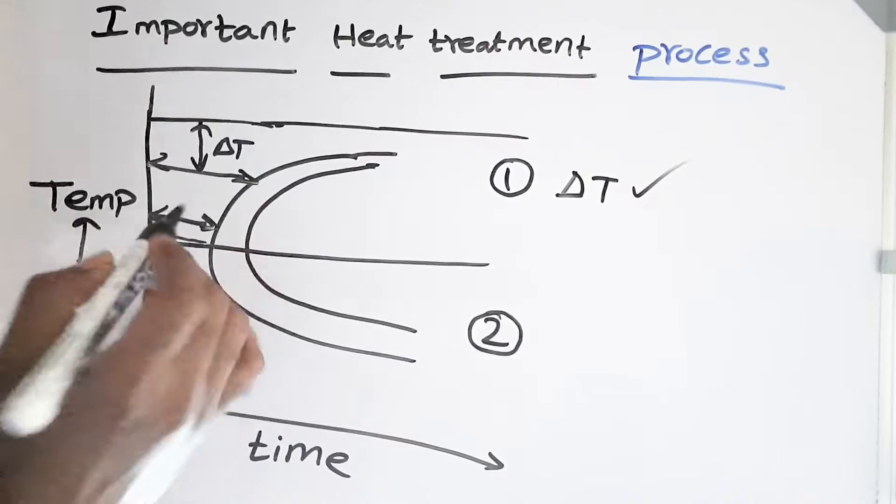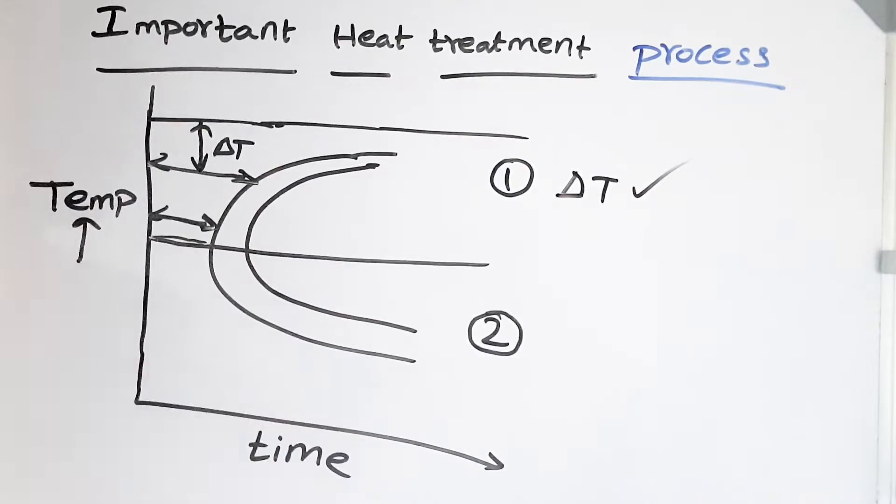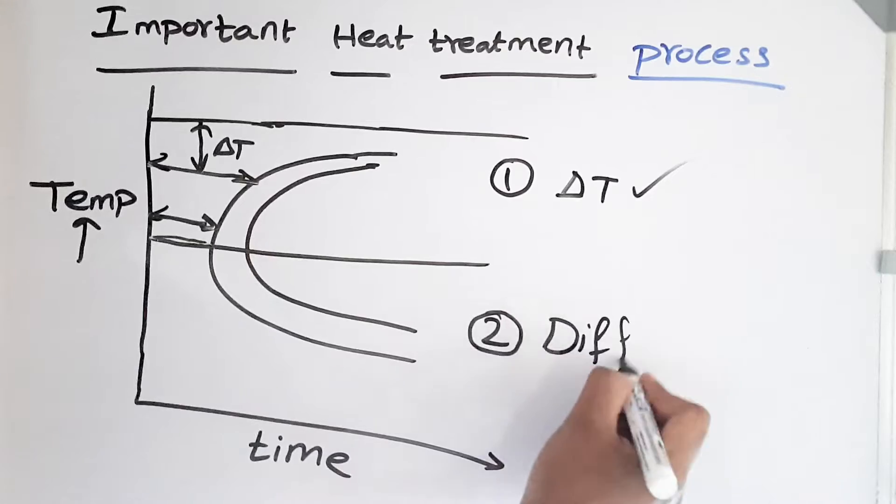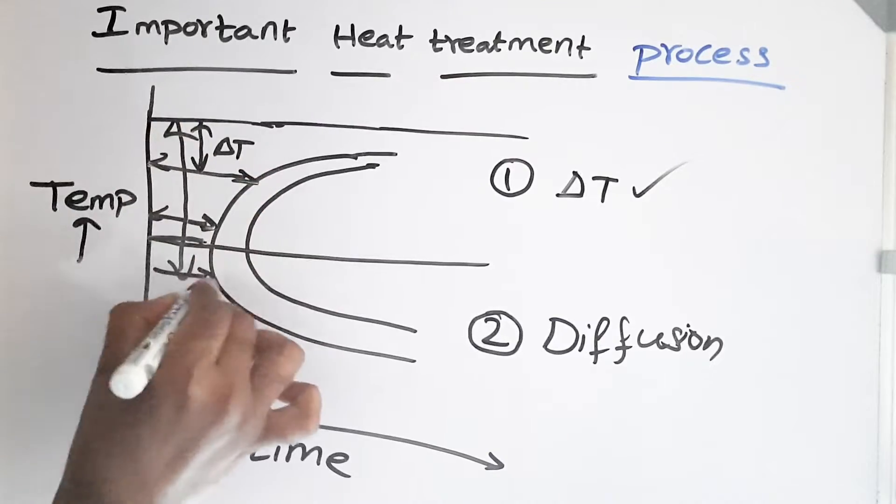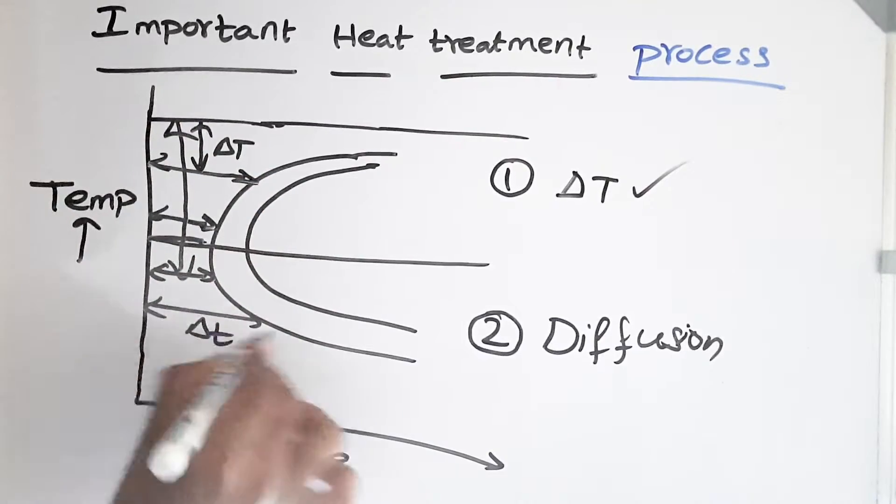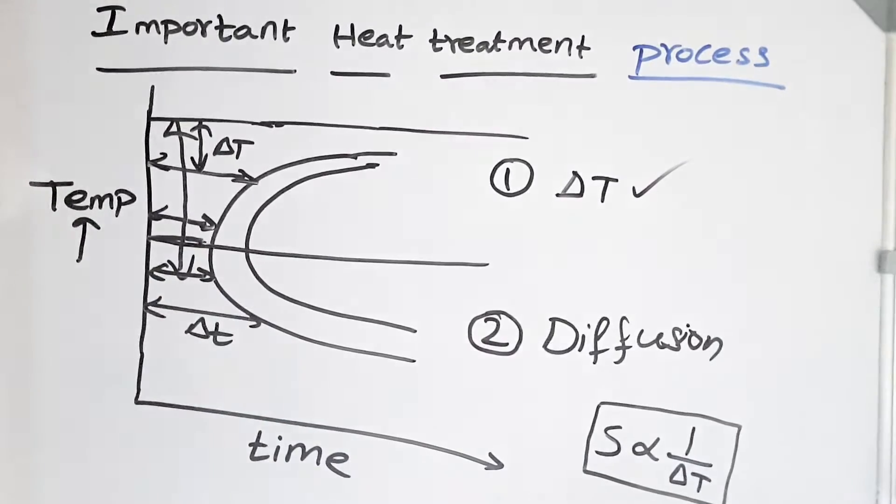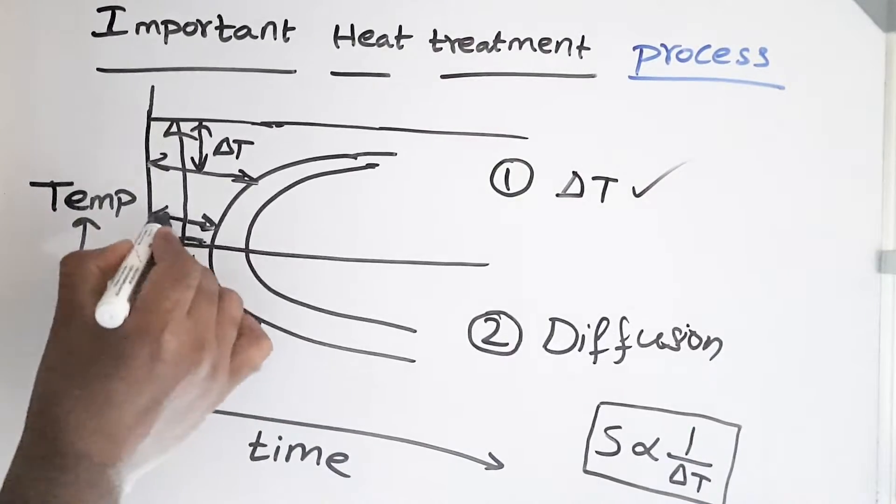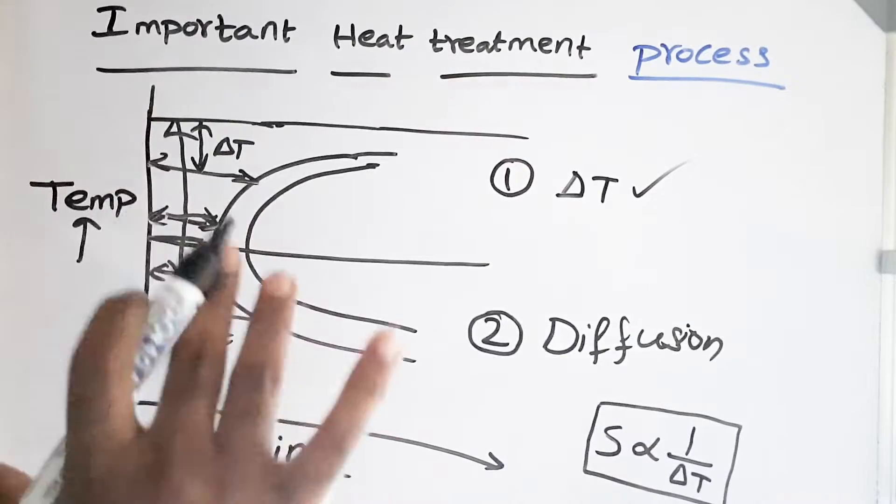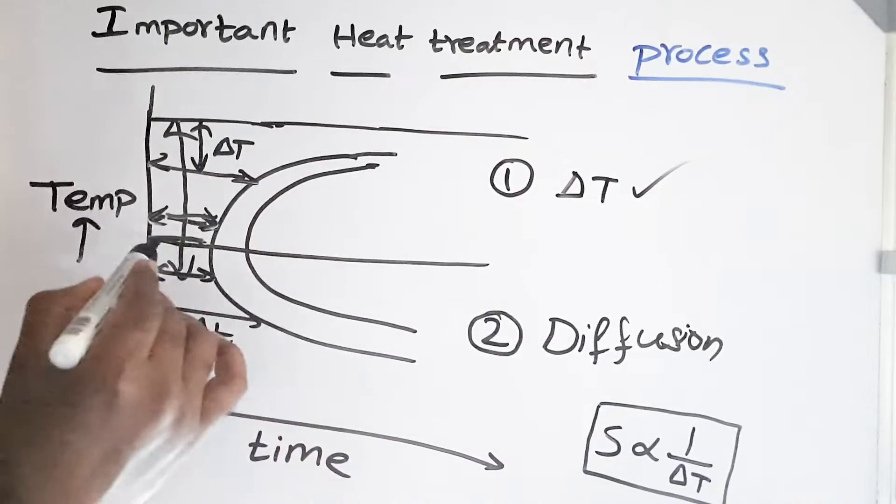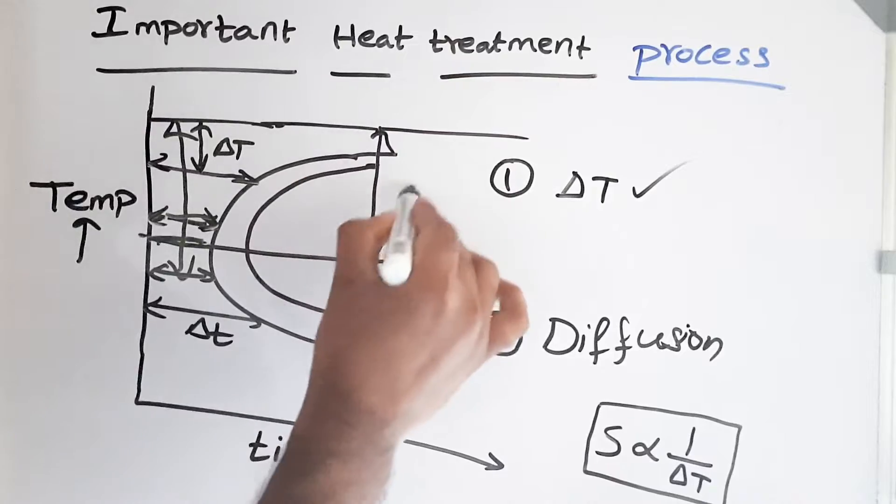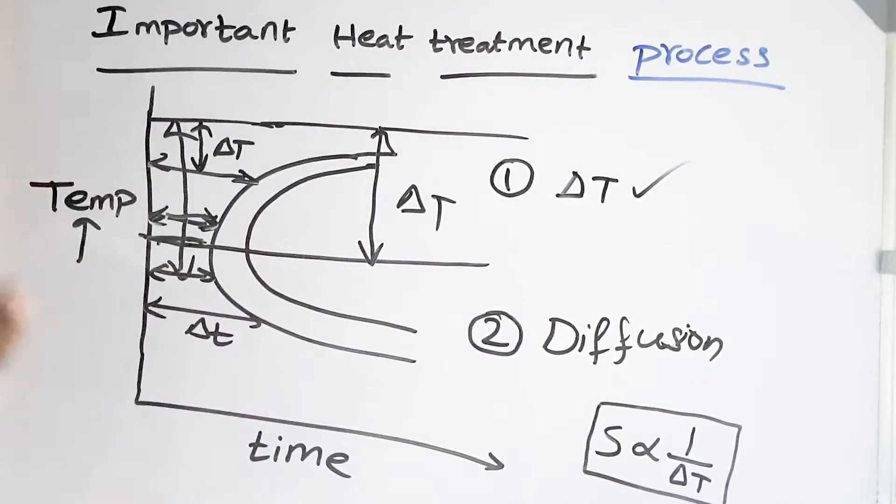But when we go to a temperature below the nose of the C curve, there is another important aspect which comes into the picture which is difficulty of diffusion. This is the reason on further increasing delta T beyond C curve increases the incubation time. Here, how incubation time affects? The lower the incubation time, faster nucleation rate which gives us a finer structure. So if we gradually increase in delta T up till the nose, the structure becomes finer and finer. But beyond the C curve, beyond the delta T greater than this, we are again losing the finest structure possible because the diffusion creates the difficulty for nucleation.